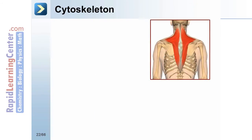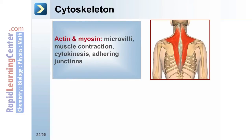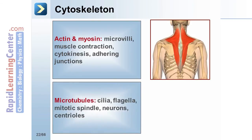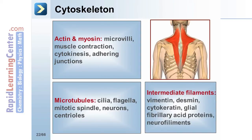The key cytoskeleton components include actin and the motor protein myosin, involved with microvilli, muscle contraction, cytokinesis, and adhering junctions; microtubules, involved with cilia, flagella, mitotic spindle, neurons, and centrioles; and intermediate filaments, involved with vimentin, desmin, cytokeratin, glial fibrillary acid proteins, and neurofilaments.